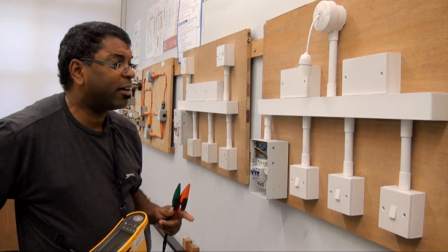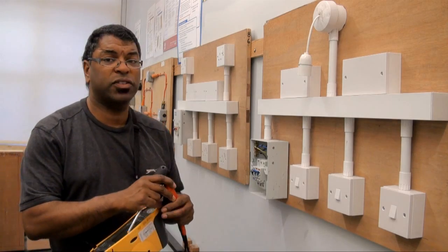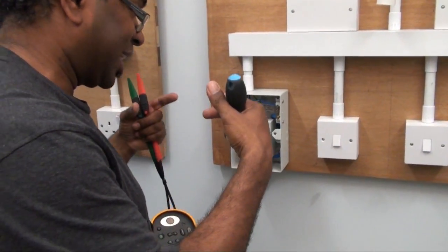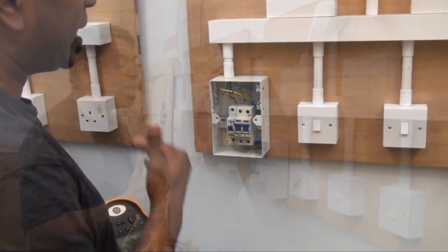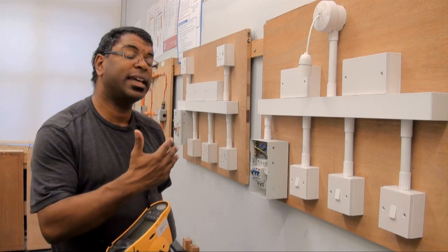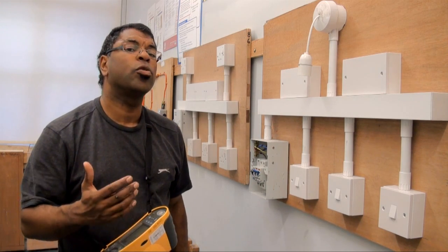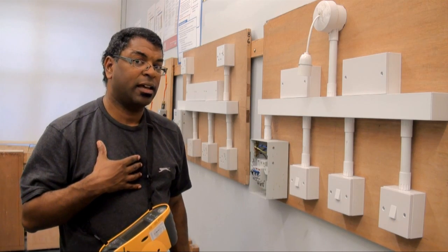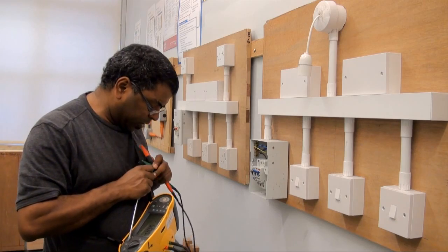In order for me to carry out an insulation resistance test on a circuit, again we have to observe that the circuit has to be dead. Again with our consumer unit there may be live circuits in here, and if that is the case we need to be observing our safe isolation protocols in order for us to carry out this test in the safest possible way.